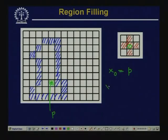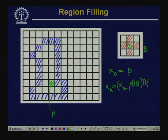The iterative algorithm for region filling at iteration step k is: xₖ = (xₖ₋₁ ⊕ B) ∩ Aᶜ, where B is the structuring element and Aᶜ is the complement of point set A. The intersection with Aᶜ ensures that dilated points coinciding with boundary pixels (which are in A) are removed, preventing the region from expanding beyond the boundary.